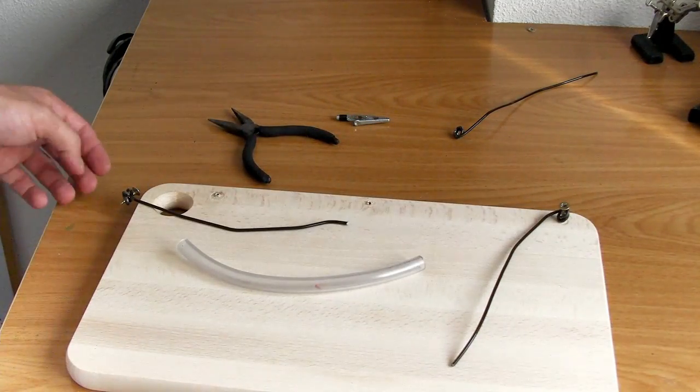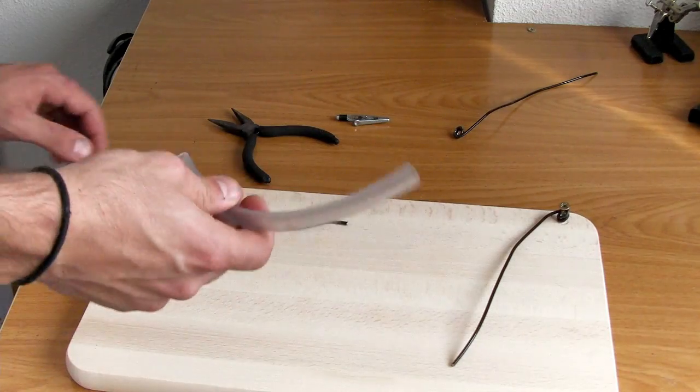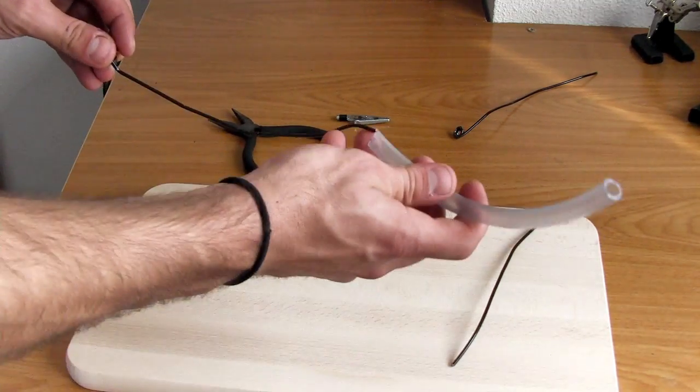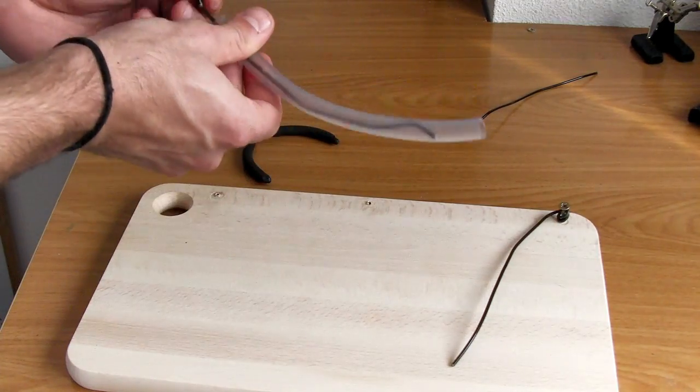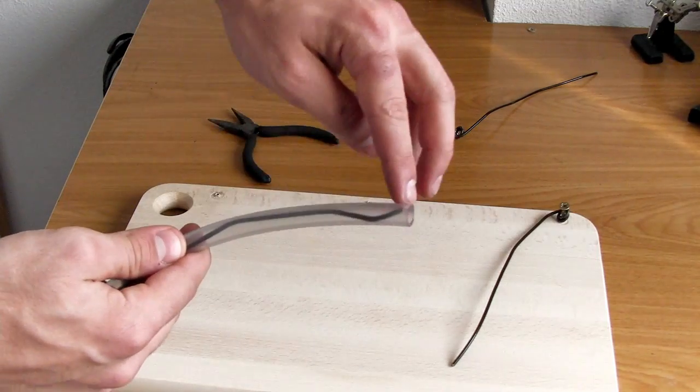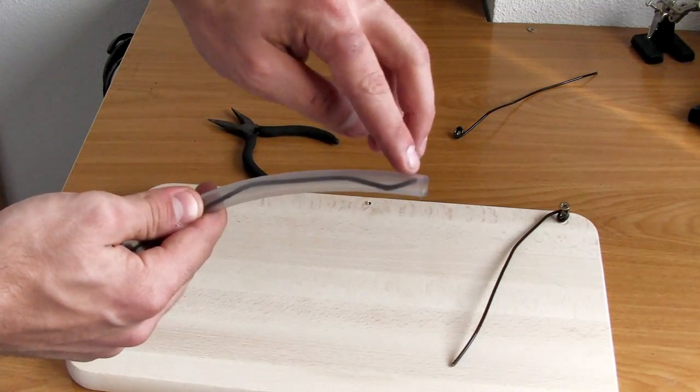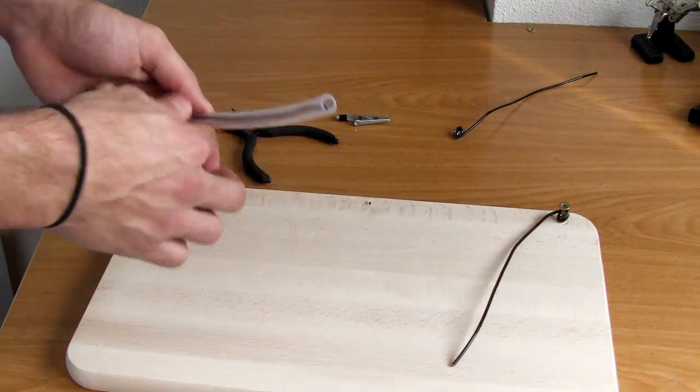Now what we need to do is cut some tube and put the wire inside of it, like this. Make sure it goes to the end, and make sure you don't cut it too short. You want it to leave a little bit longer than the wire.